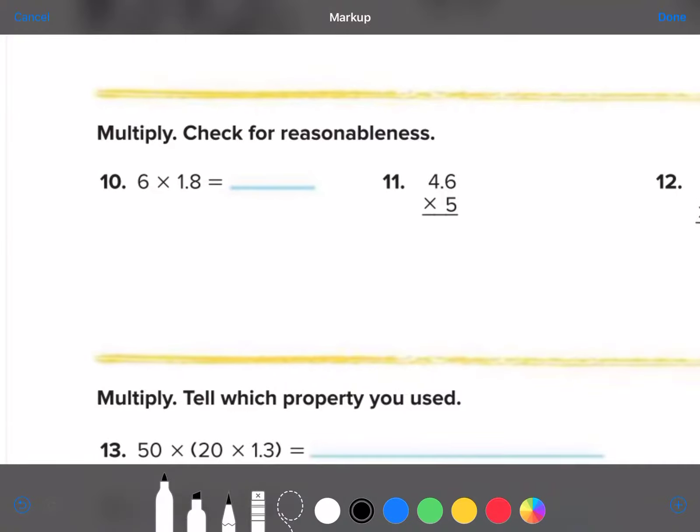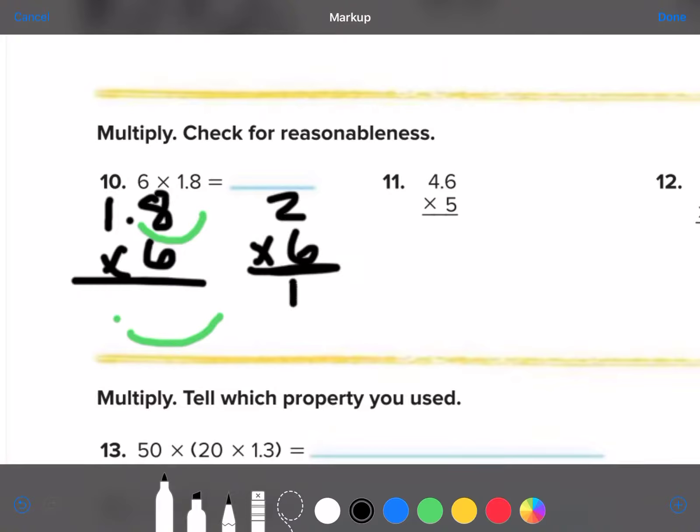Multiply and check for reasonableness. So, they want you to stack it like this. They want you to forget about the decimal. And then after you have multiplied it out, they want you to tell how many place values the decimal point went over. And that's where you put your answer. And when you check for reasonableness, you can just estimate. So let's estimate together. 1.8 is really close to 2. 2 times 6 is really close to 12. So, your answer is going to be around 12.